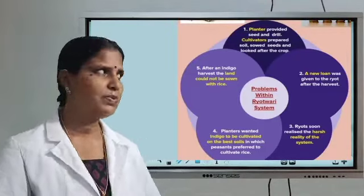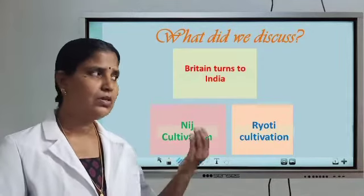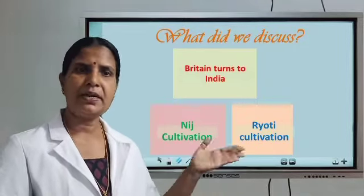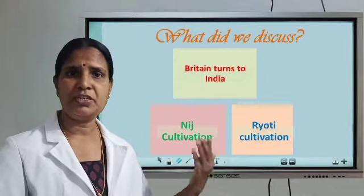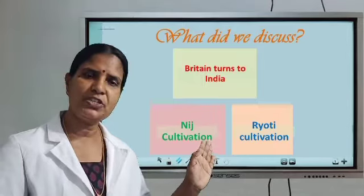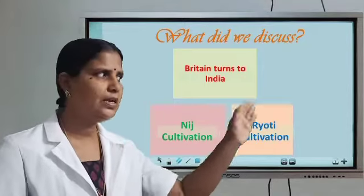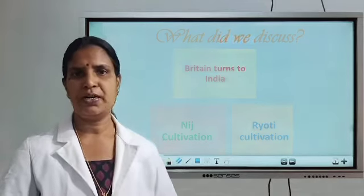I hope all of you understood. Please see the chart. Today we discussed Britain turns to India: in 1788 only 30% of indigo was imported from India, but by 1810 it increased to 95%. Company officials became planters and introduced two types of indigo cultivation — nij cultivation and ryot cultivation — each facing certain problems. Don't forget to complete the notes. I will send questions along with this video class. You have one period, 40 minutes — after seeing the video class, complete the notes that same period and send them to me. Thank you.